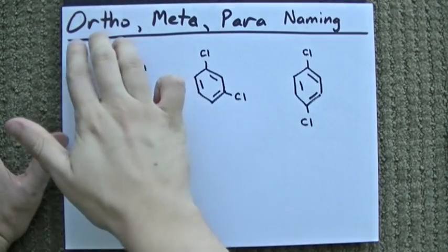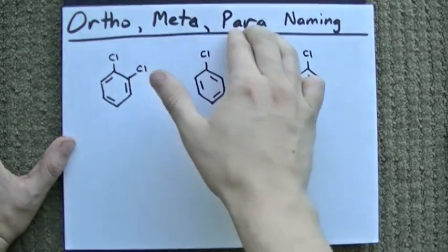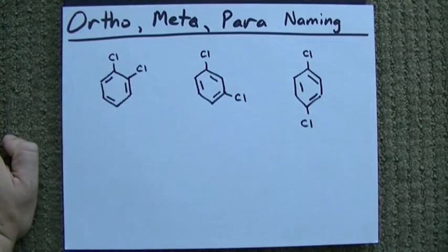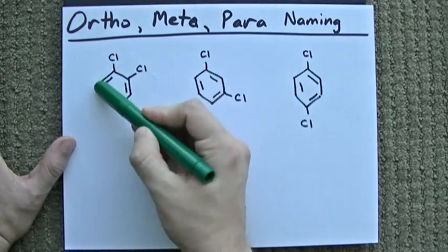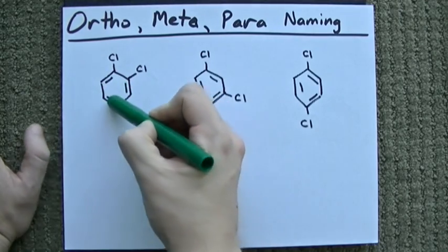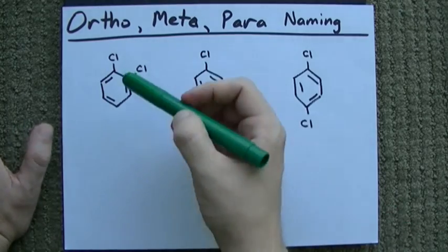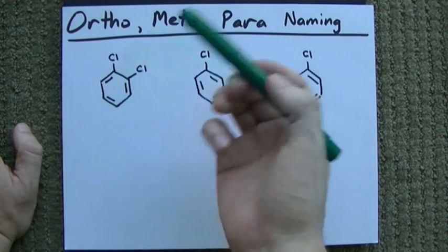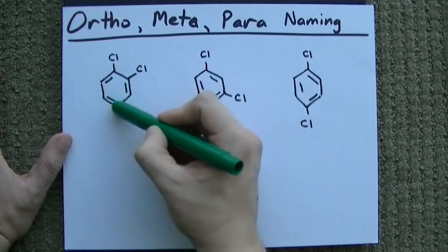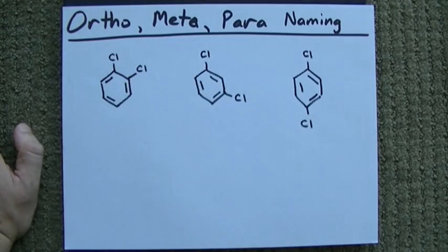Hey guys, I'm going to talk about how to name benzenes with ortho, meta, and para substituents. Benzenes are a six-carbon ring with three double bonds. Rather than calling it cyclohex-1,3,5-triene, we just call it benzene and we know this is the structure.